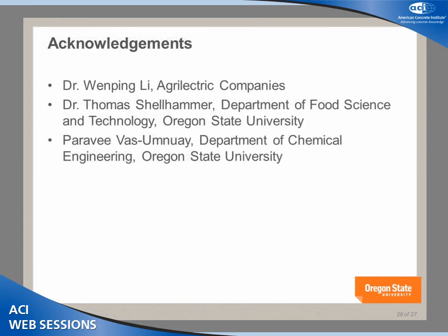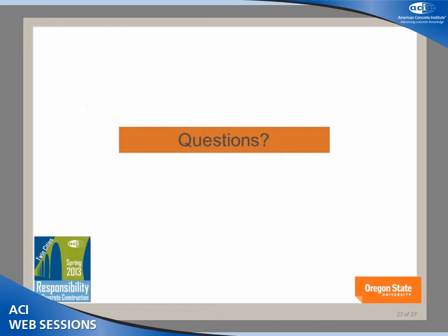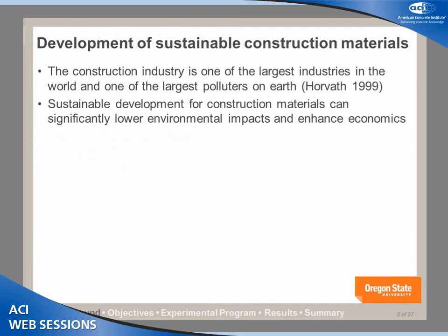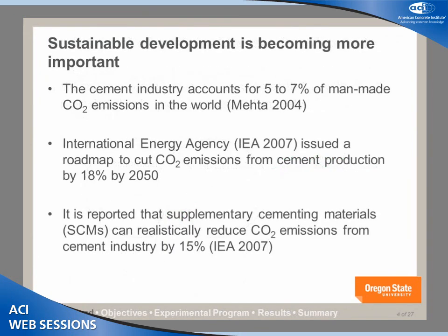I would like to thank Dr. Wen Ping Lee and Dr. Toma Chellhammer, currently in the Chemical Department. Any questions from the audience? One audience member clarified: the 18% CO2 reduction proposed by the International Energy Agency for the cement industry seems modest, but it's in absolute amounts. Since cement production is expected to rise significantly, when factoring in the increase in cement demand, the reduction of CO2 content per ton of cement is actually about 50%. Thank you, that's a good point.